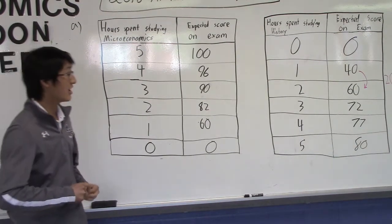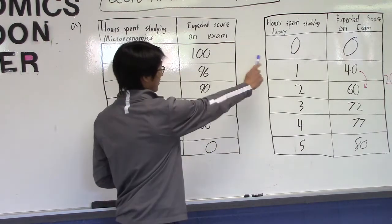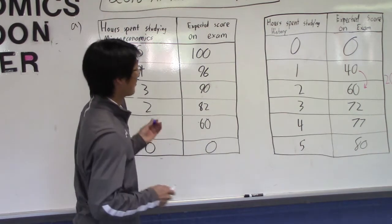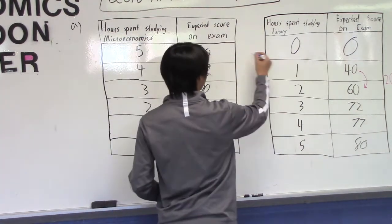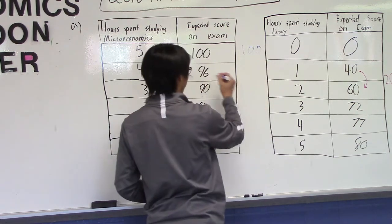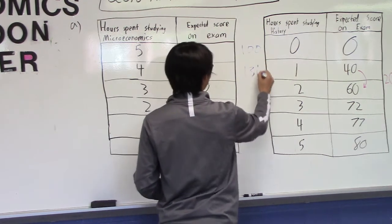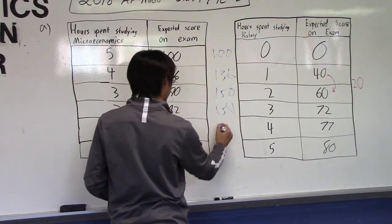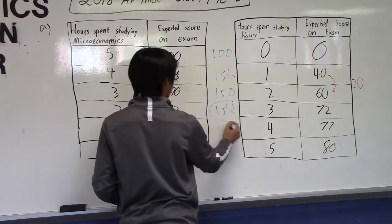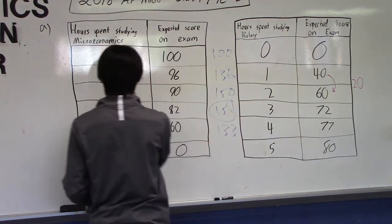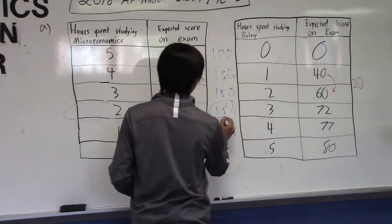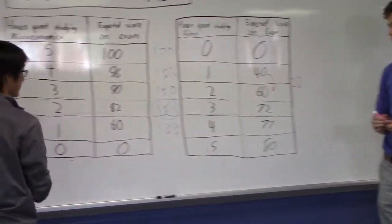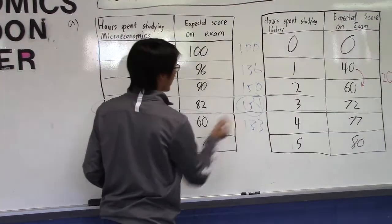Alright, so here the college board was really nice. They set up the hours accordingly, so they add up to five, like Ashton mentioned before. So if we, we can just simply add them up. So 100, zero is 100, 96, 40 is 136. We got 150, 154, and finally we get 133. So we see here the largest number, which is sum, is 154. And this row here is the maximizing, maximizing her test scores sum. So two hours of micro, three hours of history.